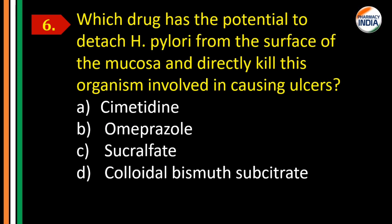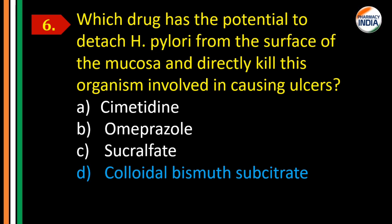Question number six: which drug has the potential to detach H. pylori from the surface of the mucosa and directly kill the organism involved in causing ulcers? Options: A) cimetidine, B) omeprazole, C) sucralfate, D) colloidal bismuth substrate. The correct answer is Option D, colloidal bismuth substrate. It kills H. pylori and helps in treating gastric acid peptic ulcer.